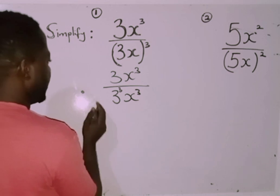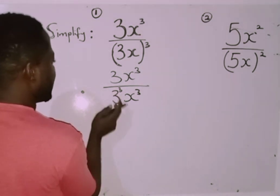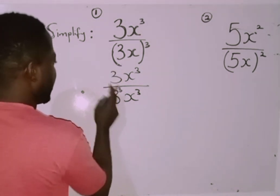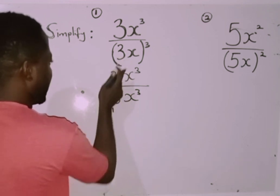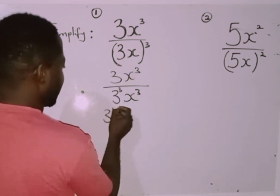According to the division rule of indices, whenever you have the same base and you are dividing them, you subtract their powers from each other. This 3 means 3 raised to power 1, so I'm going to subtract this 3 from it.